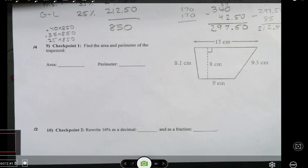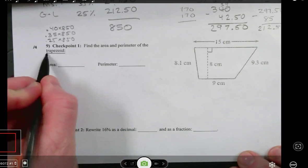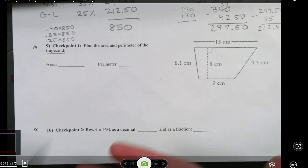Checkpoint 1, find the area and perimeter of the trapezoid. So checkpoint 1, we had homework on that. It was trapezoids, rectangles, parallelograms, and triangles. This is something from 6th grade.